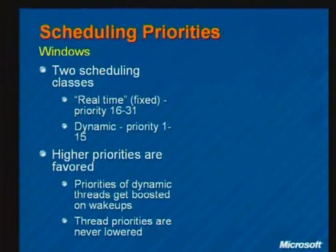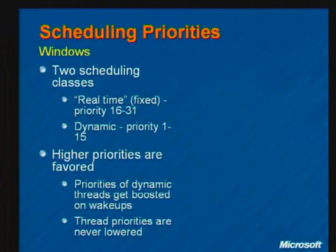Higher priorities are favored in Windows, so 31 is the highest priority. Thread priorities are never lowered below the base level they started at — if a thread starts at priority 8 (the default) and gets boosted to 10, it will eventually decay back to 8 but never go below 8.